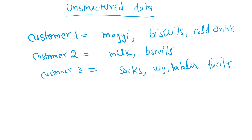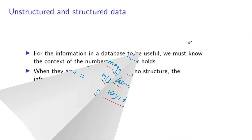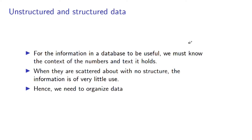There are some unstructured data as well — for example, customer one bought maggie, biscuits, cold drink; customer two bought milk, biscuits; customer three bought socks, vegetables, fruits. These data give no clear idea about the customers or cases. So these are unstructured data. For the information in a database to be useful, we must know the context of the numbers and text it holds. When data are scattered about with no structure, the information is of very little use. Hence, we need to organize data.